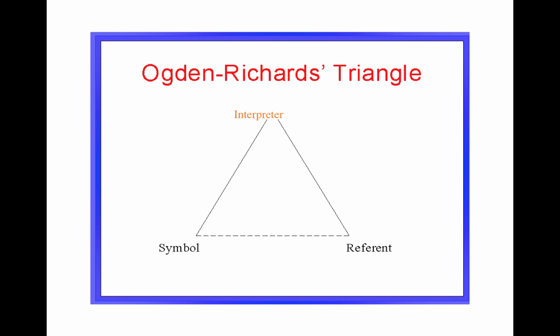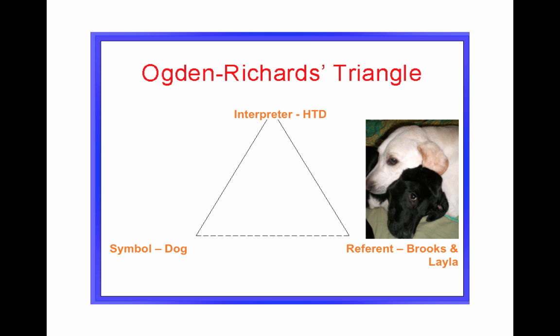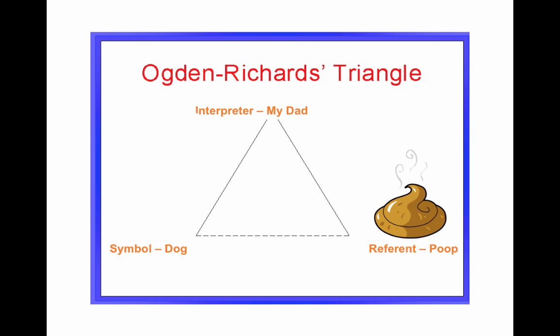Let's look at an example. If you assign me as the interpreter and give me the symbol of the word 'dog,' the referent for me is very positive. I have two dogs, Brooks and Layla — they're so precious, my little fur babies. So the meaning of the symbol 'dog' for me is very positive. Now, if we change the interpreter to my dad and keep the same symbol 'dog,' it changes the referent for him. For him, it's a very negative referent — he thinks of dog poop and the ongoing war with his neighbor's dog. He can't stand my dogs, thinks they shed everywhere and are annoying. So the referent for him carries a very negative meaning.